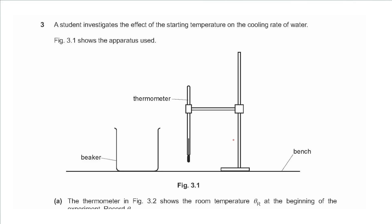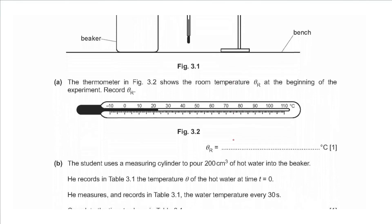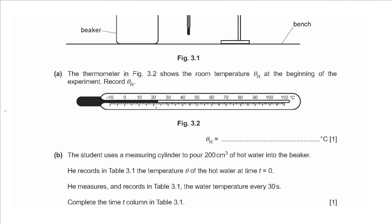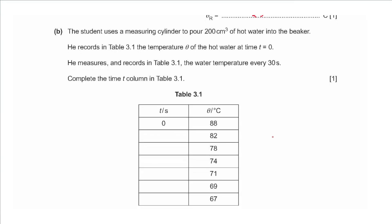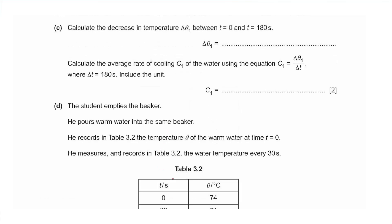Question 3 says a student investigates the effect of starting temperature on the cooling rate of water. Figure 3.1 shows a beaker, thermometer on a clamp. Figure 3.2 shows the room temperature theta-r at the beginning of the experiment — just before 25, so 23 degrees Celsius. Part B: the student pours 200 cm³ of hot water into the beaker and records temperature every 30 seconds. The time column goes: 0, 30, 60, 90, 120, 150, 180.